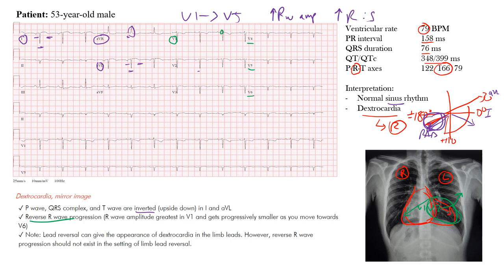What tells dextrocardia apart from limb lead reversal? Both conditions can look similar in the limb leads, but the reverse R wave progression in the precordial leads is not seen with limb lead reversal — because limb lead reversal only affects the limb leads and doesn't touch the precordial leads. If the precordial leads are also messed up, that's a lead placement issue, but that's typically not the case.